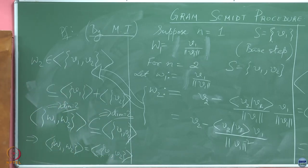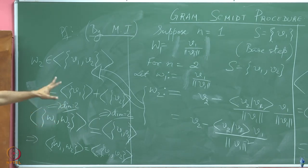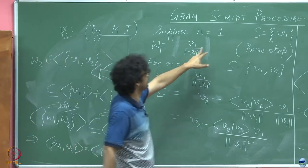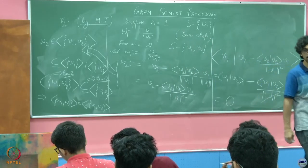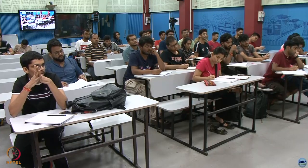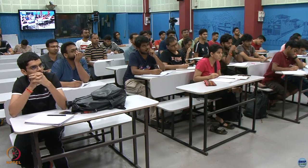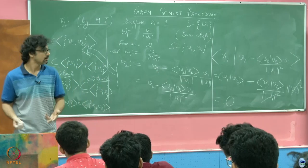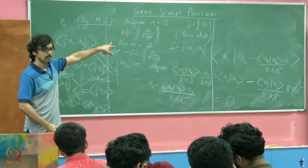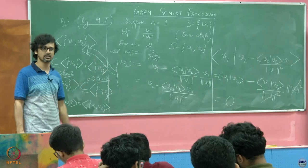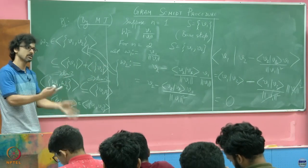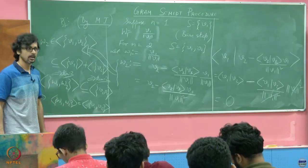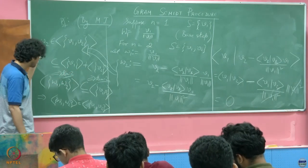So the Gram-Schmidt procedure is proved for n equals 1 and n equals 2. The reason we worked through n equals 2 in detail is that the inductive step — assuming it's true for n equals p and extending to n equals p plus 1 — follows exactly these same arguments and reasoning.